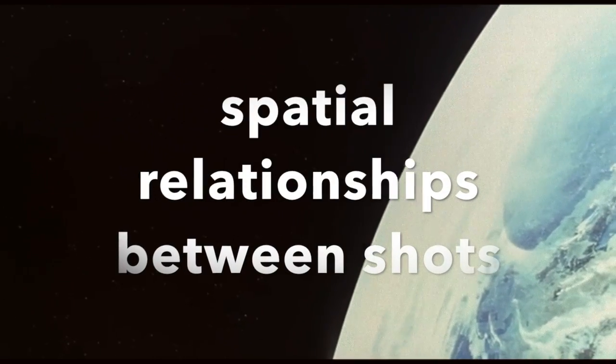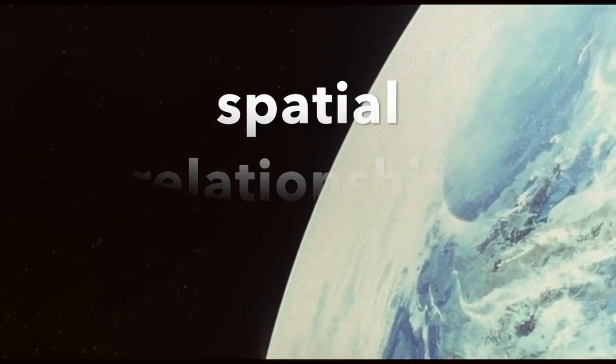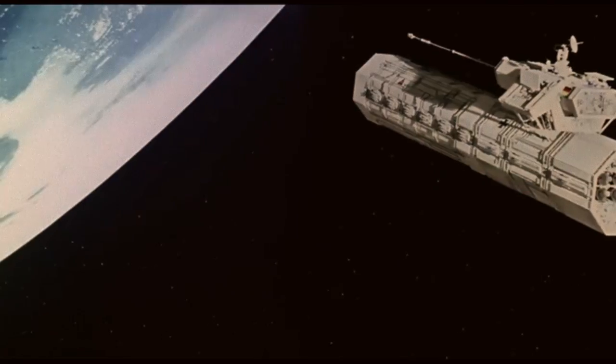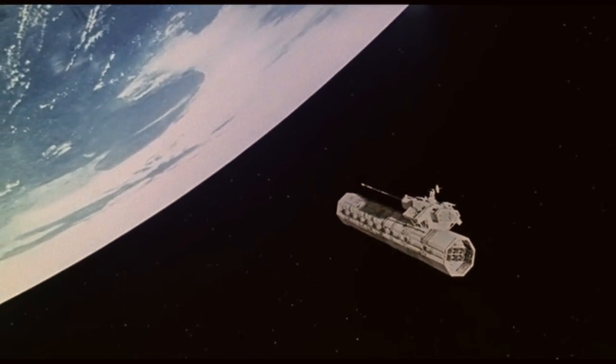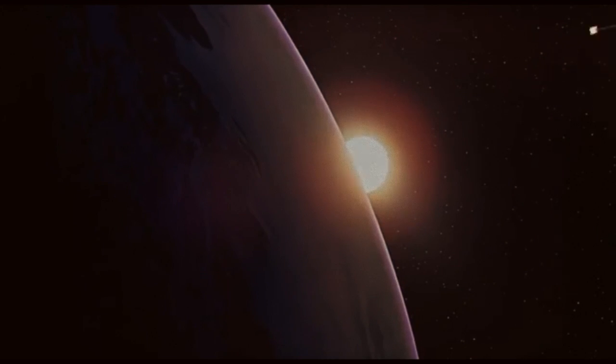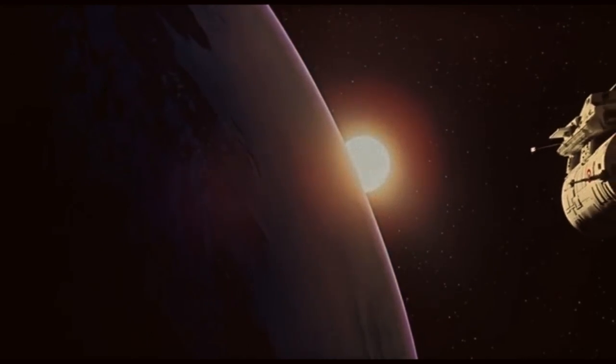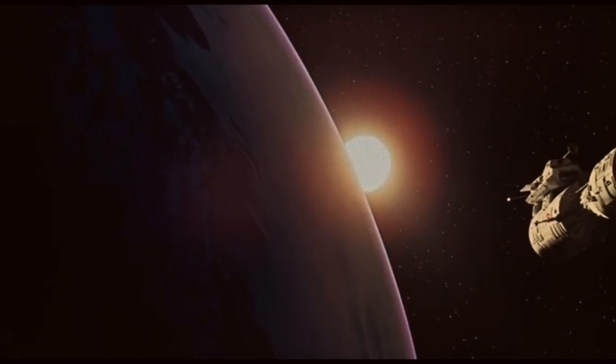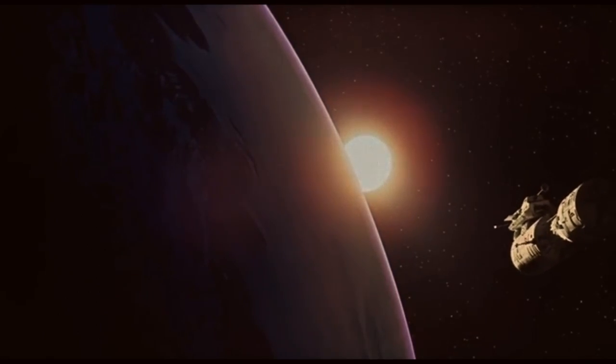Now let's talk about spatial relationships between shots. When talking about spatial relationships, the director wants us to be able to create a mental map of the setting. The scene playing before you now does just that. Kubrick is building the viewer's mental map of perhaps the most spacious scene a film could possibly be set in: outer space. Kubrick does an excellent job of following the spacecraft, keeping up the mental map that the viewer is creating.